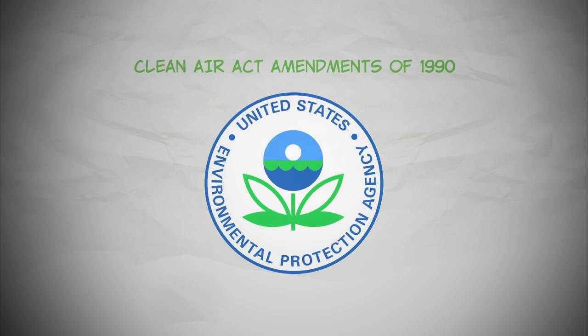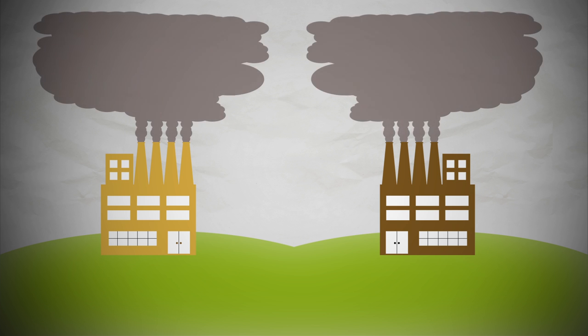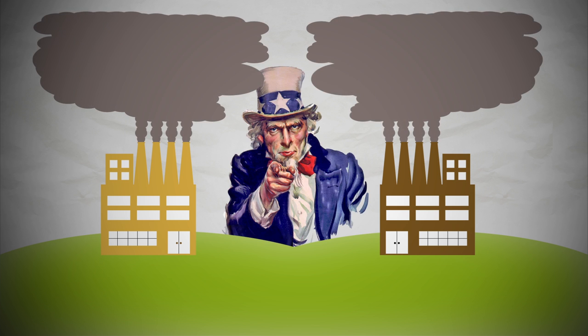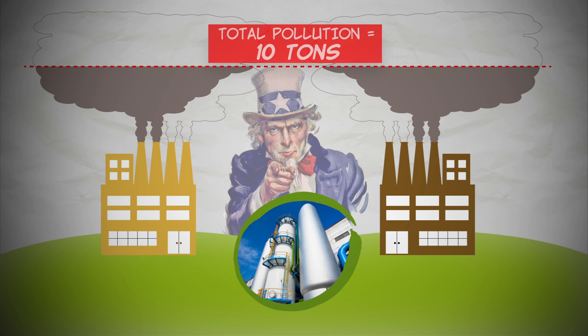The Clean Air Act Amendments of 1990 introduced a novel way to combat acid rain: tradable permits. Here's how they work. Let's consider two power plants or factories that are polluters — they emit this much polluting gas. The government could control pollution by commanding that all factories install certain technologies like scrubbers. Using this command and control method, suppose that pollution would be reduced to this.